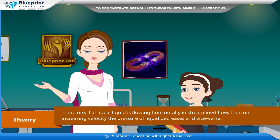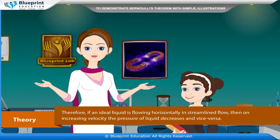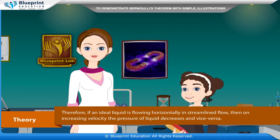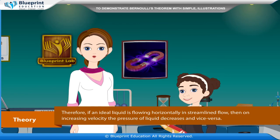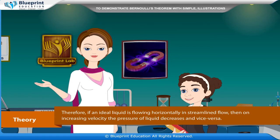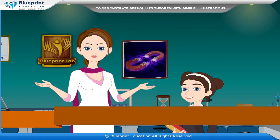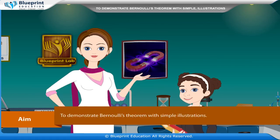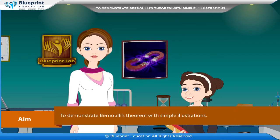Therefore, if an ideal liquid is flowing horizontally in streamlined flow, then on increasing velocity, the pressure of liquid decreases and vice versa. Our aim is to demonstrate Bernoulli's theorem with simple illustrations.